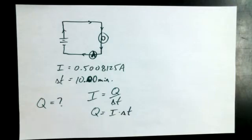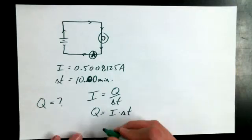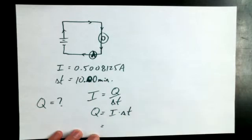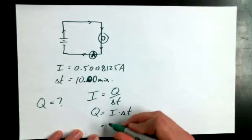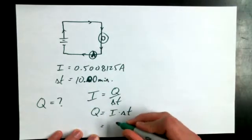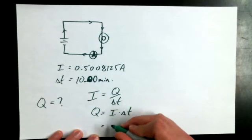We can actually count how many electrons must have gone through. Remember, current is in amps, but that's really coulombs per second.